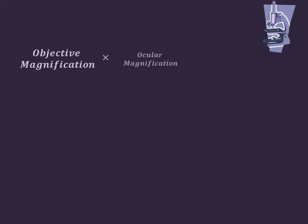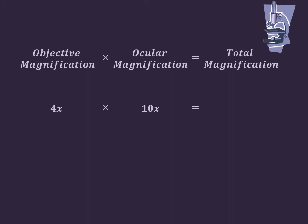Again, objective magnification times ocular magnification gives you total magnification. So 4x magnification multiplied by 10x ocular magnification gives you 40x total magnification. 10x magnification times 10x ocular magnification gives you 100x total magnification. And 40x objective magnification multiplied by 10x ocular magnification gives you 400x total magnification. It's a very simple formula. As long as you multiply by the ocular magnification, you should be fine. You can even memorize the values.